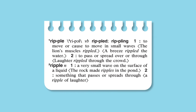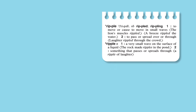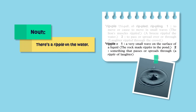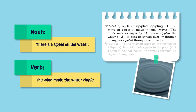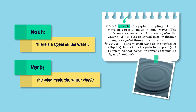Have you ever seen two words that are spelled the same way but have different meanings? These are called homographs. In this dictionary, each homograph has a separate entry. Their headwords look the same, except for a small number just before it. Ripple has two homographs. One is a noun, as in, there is a ripple on the water, and one is a verb, as in, the wind made the water ripple. Because they're both pronounced the same, only the first homograph gets a pronunciation.